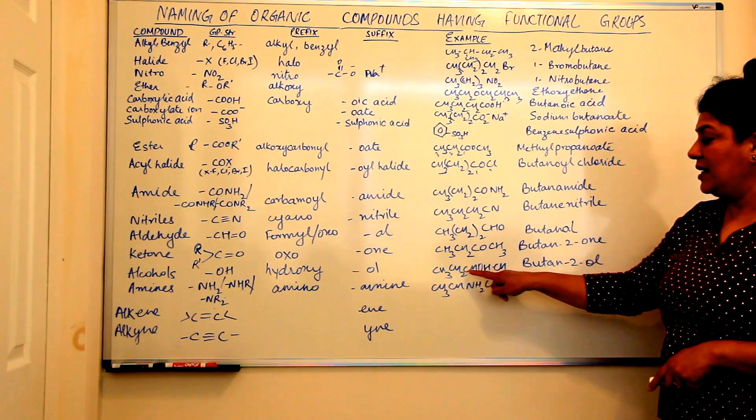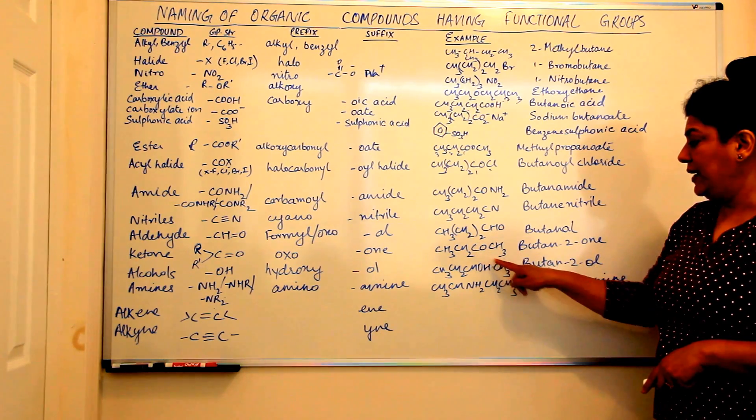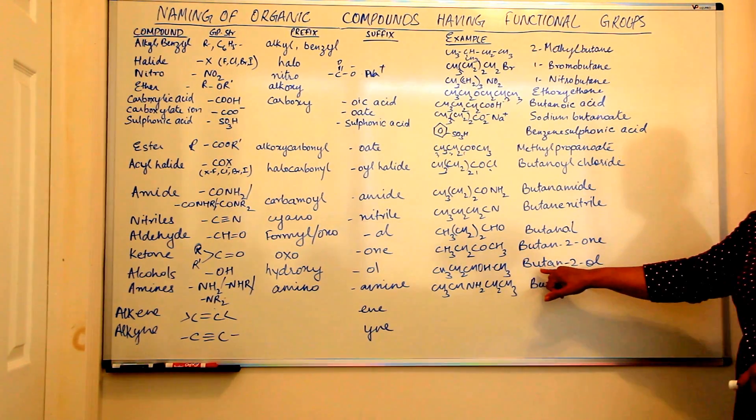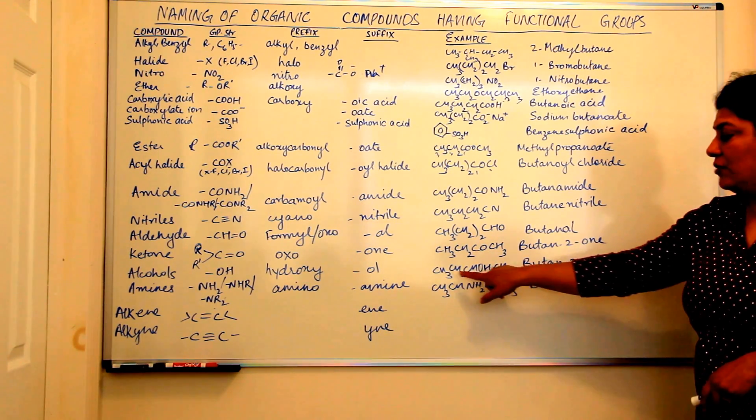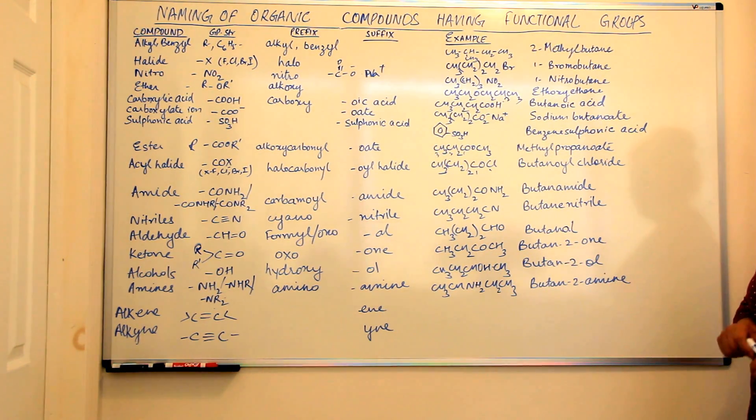So it is CH3, CH2, CH, OH, CH3. We would name this as butane. Since the OH is on the second carbon, comes from this side, it is butane-2-ol.